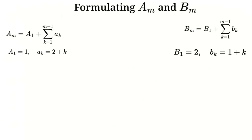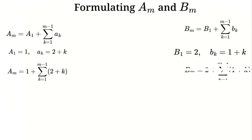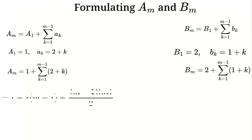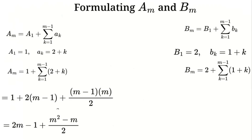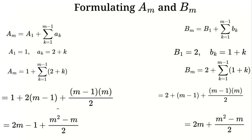Now let's compute these sums to find the general formulas. For Sequence A: A(m) equals 1 plus 2(m minus 1) plus one-half of (m minus 1)(m). Simplifying, A(m) equals 1 plus 2m minus 2 plus one-half of (m² minus m), which gives A(m) equals 2m minus 1 plus one-half(m² minus m). For Sequence B: B(m) equals 2 plus (m minus 1) plus one-half of (m minus 1)(m). Simplifying, B(m) equals 2m plus one-half(m² minus m). These are the general formulas for Sequences A and B.